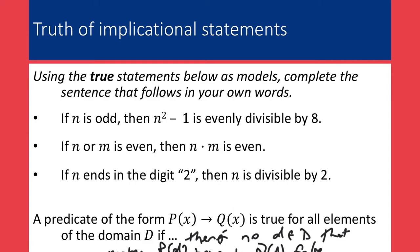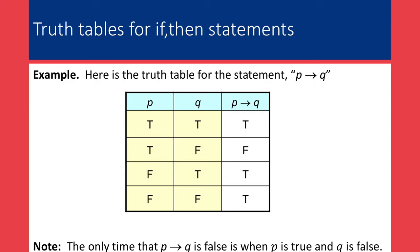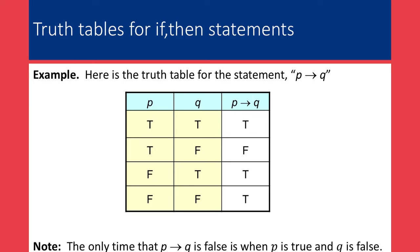When we have true statements, it's because we don't believe there is any domain element that makes the hypothesis true and the conclusion false. So the implication is true if there is no domain element that makes the hypothesis true and the conclusion false. That analysis of the if-then statement leads us to this truth table. The only scenario in which the implication P implies Q is false is the scenario where the hypothesis is true and the conclusion is false — row two is the only scenario where we would have a false implication.